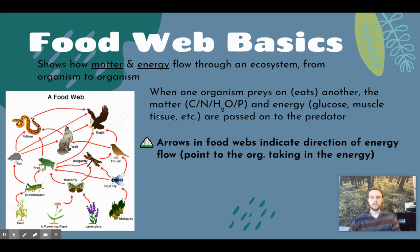These arrows show the direction of energy and matter movement. Students sometimes get confused trying to memorize whether arrows point at the eater or the organism being eaten, but it's easier to just remember that the arrow shows the direction of energy — the organism the arrow points at is taking in the energy and matter. For example, the grasshopper eats the corn and takes in the energy or glucose from the corn for movement or growth, and also takes in nitrogen and phosphorus to build more of its body. So the flow goes from corn to grasshopper.